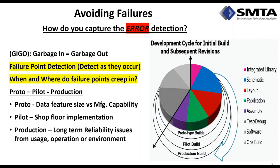Now let's look at where errors come in. In the prototype design phase, it's your data feature size versus the manufacturing capability — but which manufacturer? The proto house can build anything. You need to target the production capabilities. The pilot is more about shop floor implementation — process-related. Production is about long-term reliability issues arising from usage, operation, environment, and the accumulative stresses from manufacturing stages. Heat is not our friend. We're going to see how heat will bother us during usage, manufacturing, operation, and environment.